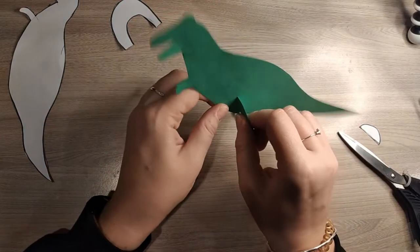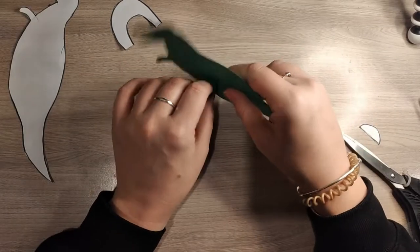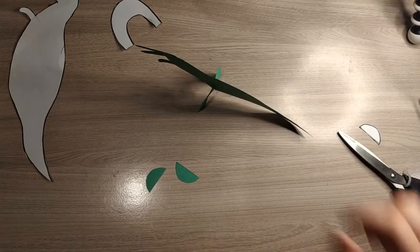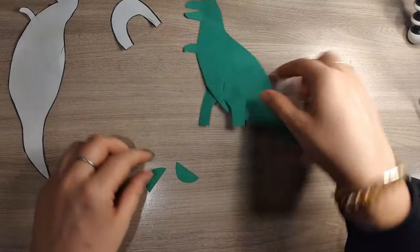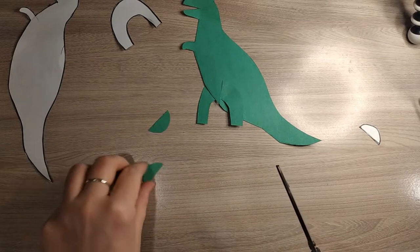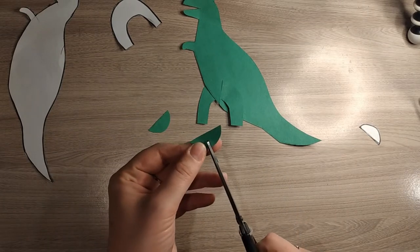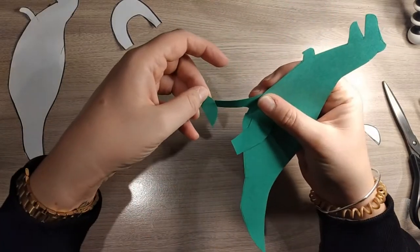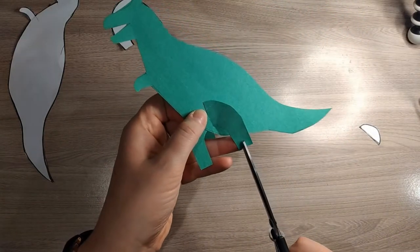And you can slot them together, and here we're going to have the legs like this. Now we're going to add the feet. Again, we just need a little snip in the feet, and these are going to slide onto the legs. We need a little snip in the legs, in the bottom of the legs too, just a tiny one.